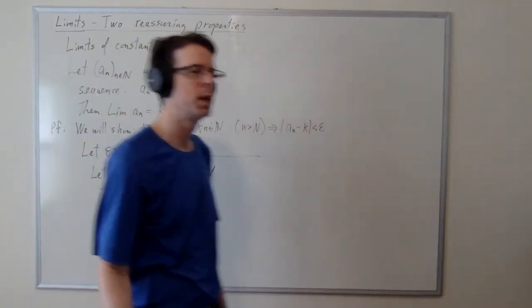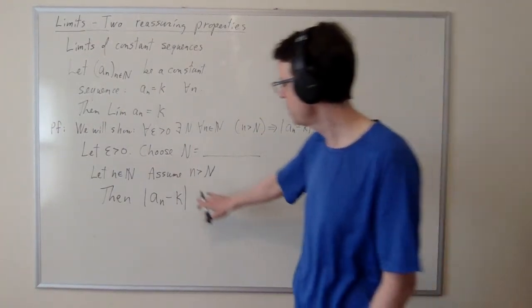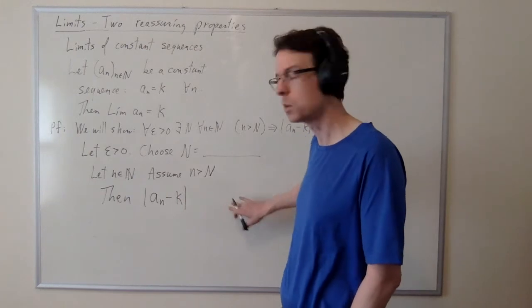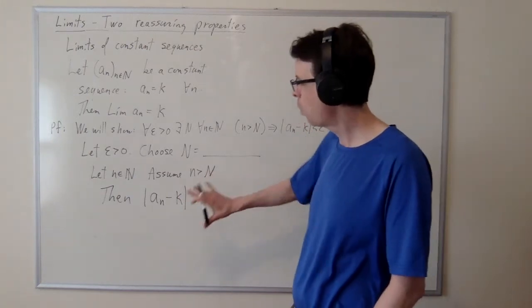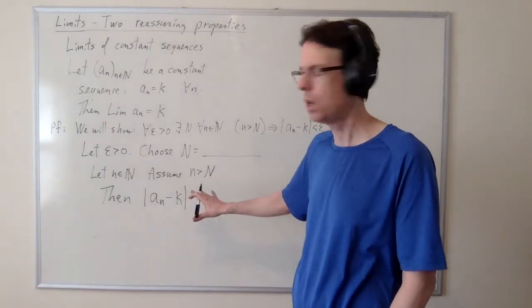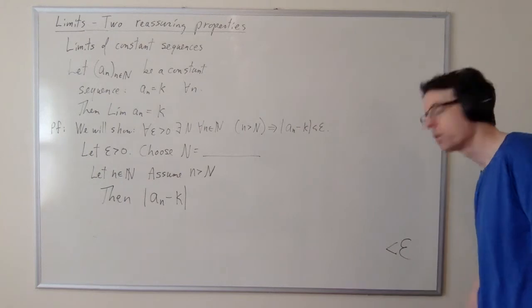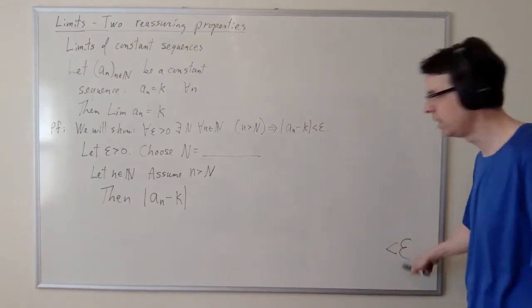And this is where I'm supposed to begin this long, long computation, right? Which usually involves many steps. And I have equals, equals, equals. And I can have less than or equal to, less than or equal to, less than or equal to. We always start this computation with any obvious algebra that can be done. And we always end this computation, if we do it right, with less than epsilon in the end.